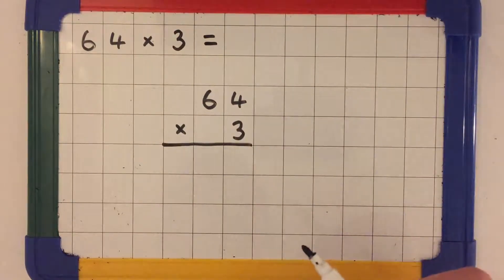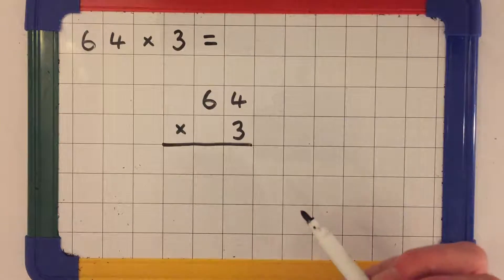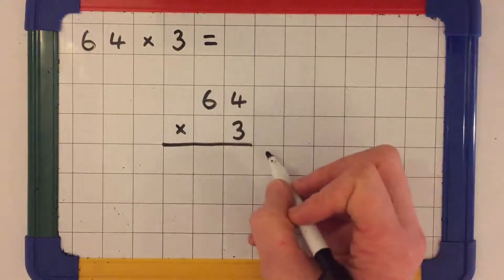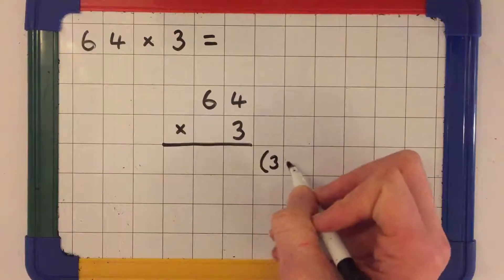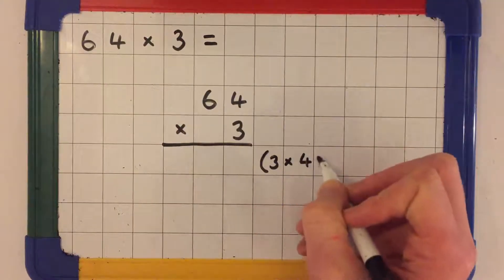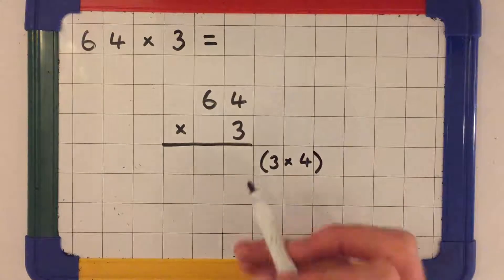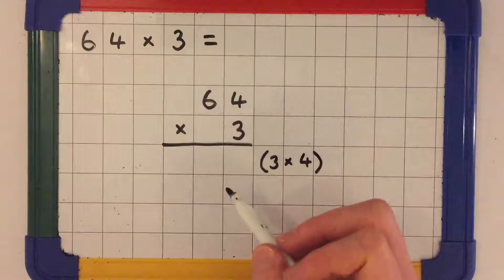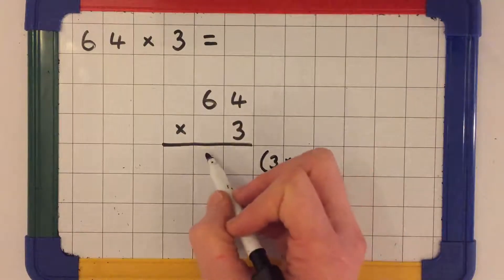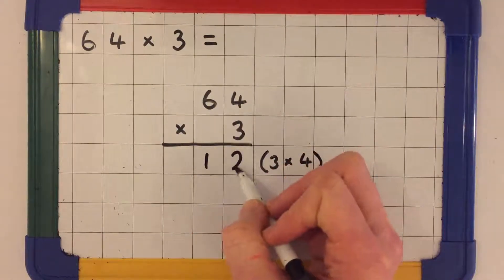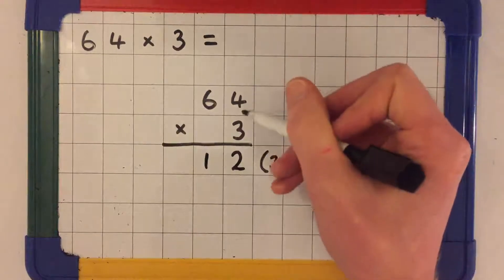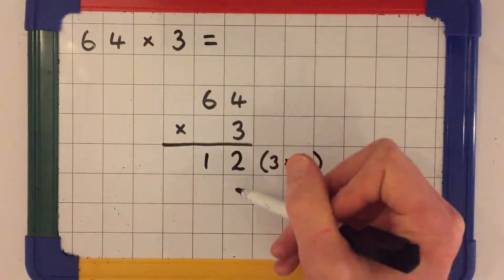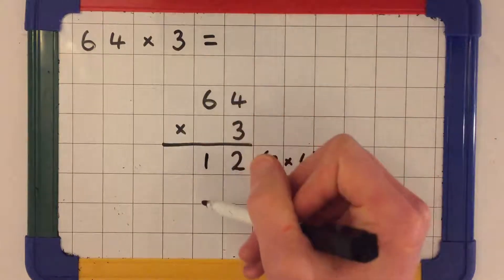The first equation we're going to solve is 3 multiplied by 4. So I'll write 3 multiplied by 4 in brackets next to where we're going to write the answer. 3 multiplied by 4 is 12. Notice how I'm writing all of my ones in one column and all of my tens in another column.